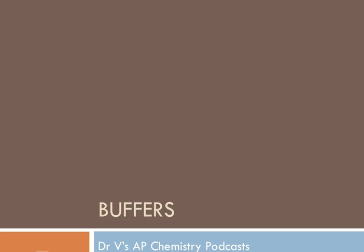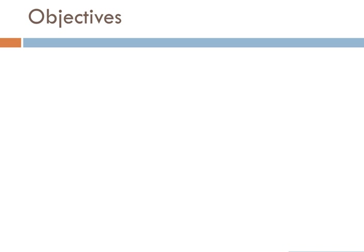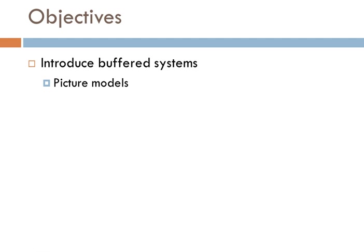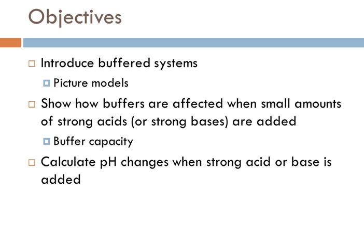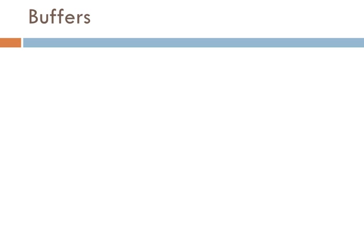Hi, and welcome to Dr. V's AP Chemistry podcast. The focus today is buffers. Buffers are a major topic in AP Chemistry, and they're studied extensively in first-year college-level chemistry courses and in nursing courses. In this webcast, I'd like to introduce the concept of a buffer, the components of a buffer, what they're made of, why they're important. We'll use picture models to explore this idea, talk about how buffers are affected if you add small amounts of strong acids or bases, discuss buffer capacity, and do some calculations.